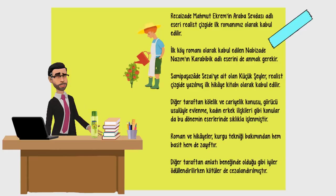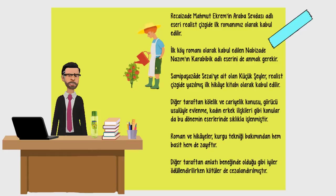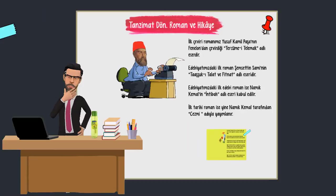Sami Paşazade Sezai'ye ait olan Küçük Şeyler, realist çizgide yazılmış ilk hikaye kitabı olarak kabul edilir. Diğer taraftan kölelik ve cariyelik konusu, görücü usulüyle evlenme, kadın-erkek ilişkileri gibi konular da bu dönemin eserlerinde sıklıkla işlenmiştir. Roman ve hikayeler kurgu tekniği bakımından hem basit hem de zayıftır. Anlatı geleneğinde olduğu gibi iyiler ödüllendirilirken kötüler de cezalandırılmıştır.